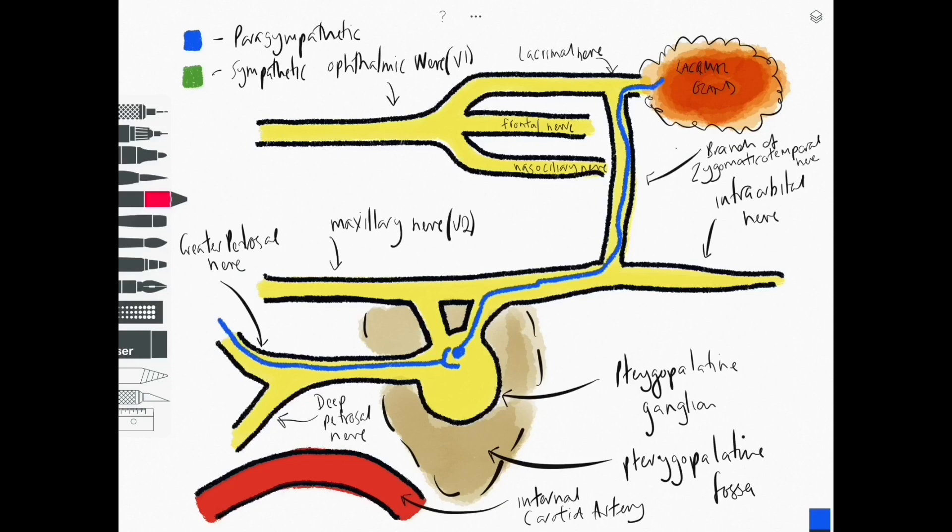The sympathetic supply is different coming on in green. Of course the preganglionic sympathetic fibers will have synapsed in the superior cervical ganglion wrapped as a plexus around the internal carotid artery and made their way in via the deep petrosal nerve. They pass through the pterygopalatine ganglion but they do not synapse there.